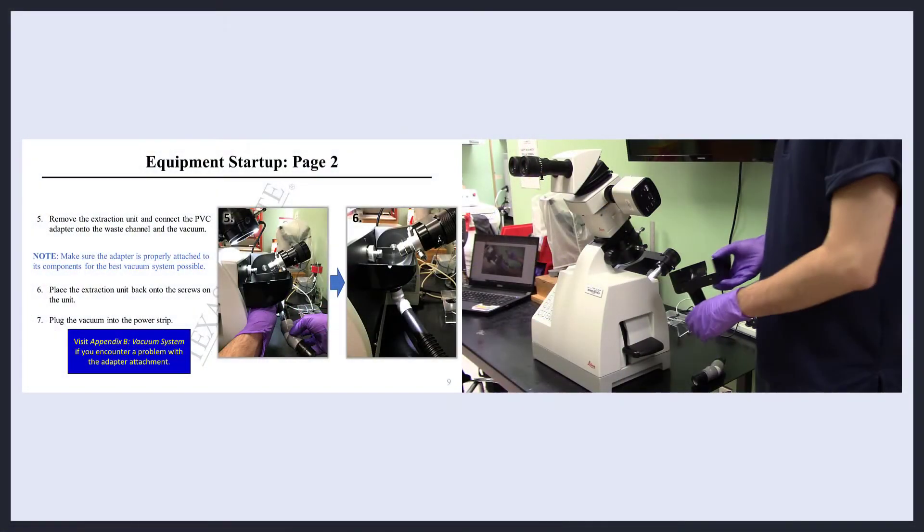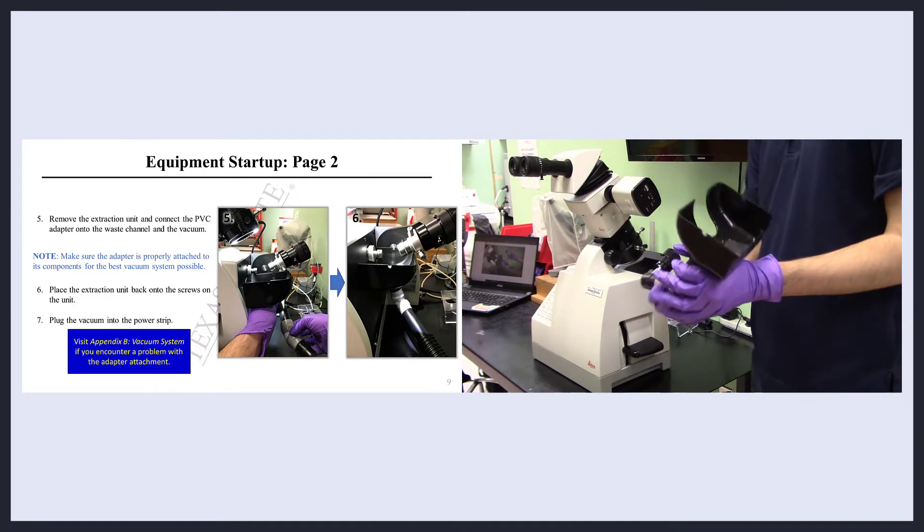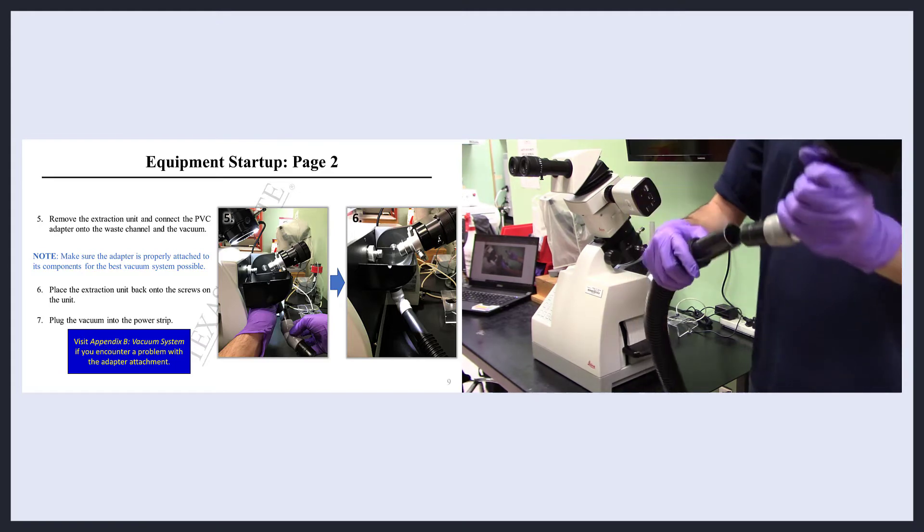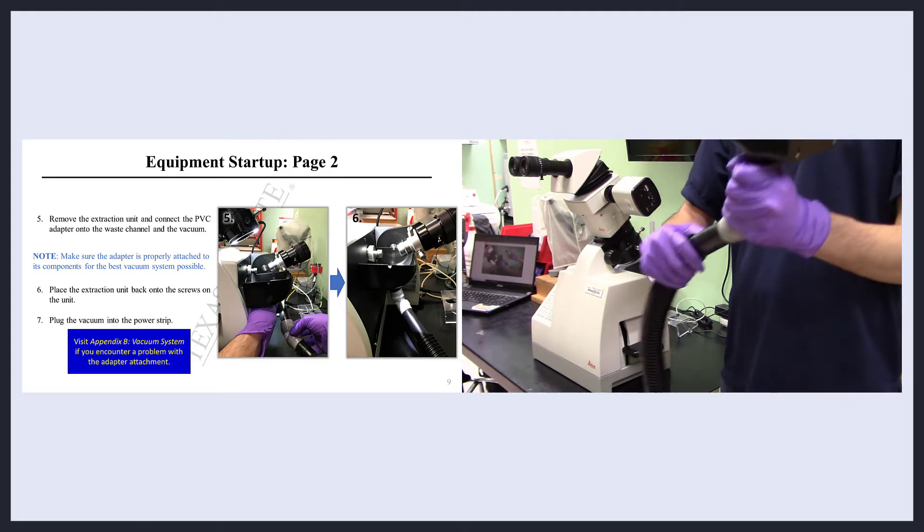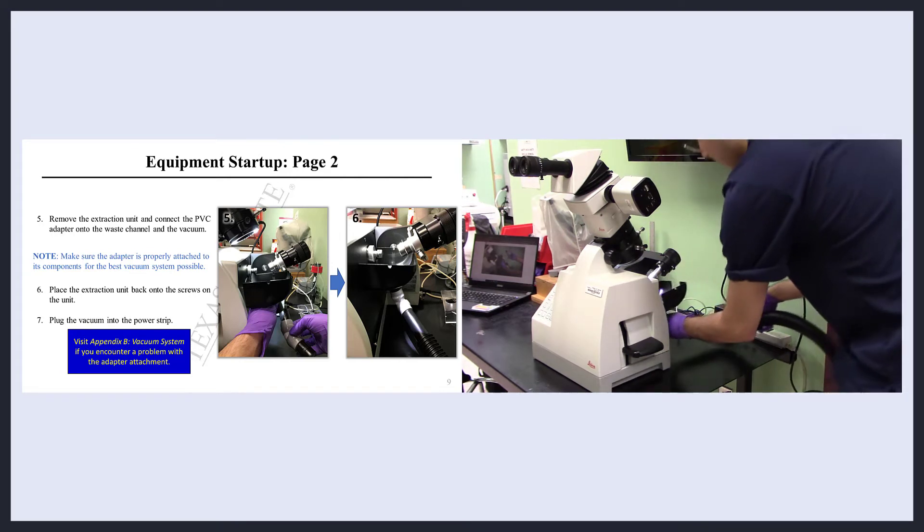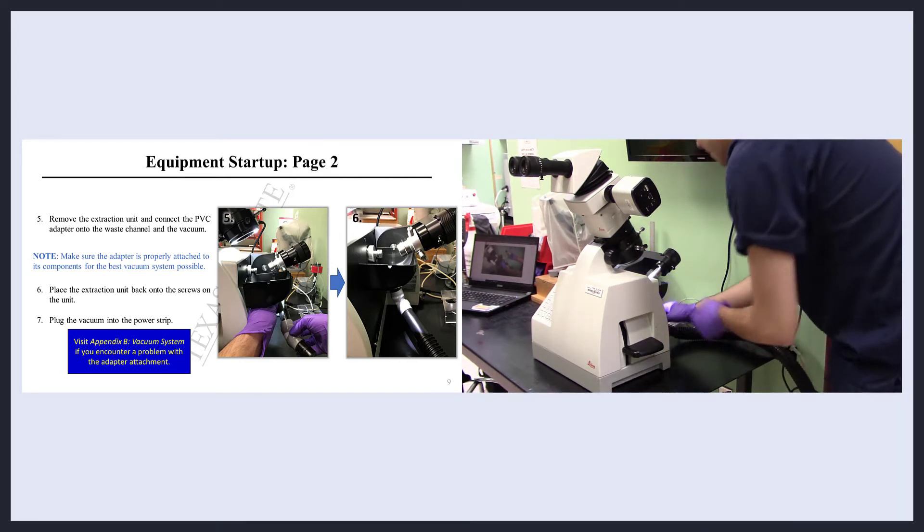To attach the vacuum system, remove the extraction unit and connect the PVC adapter into the waste channel of the extraction unit and the vacuum as shown. It is important to make sure the adapter is properly attached for the best vacuum system possible. Place the extraction unit back onto the screws on the unit and plug in the vacuum.